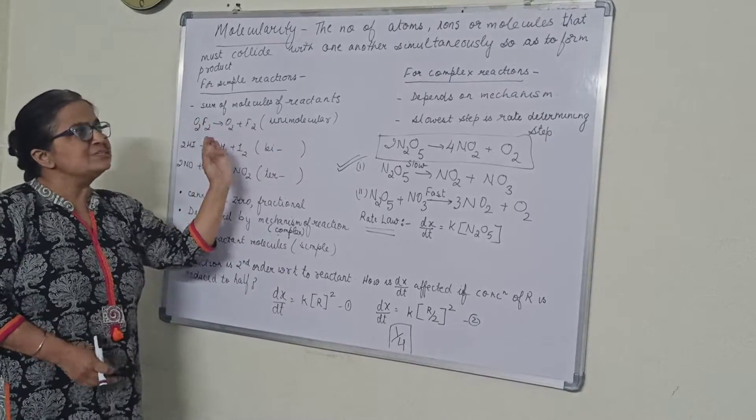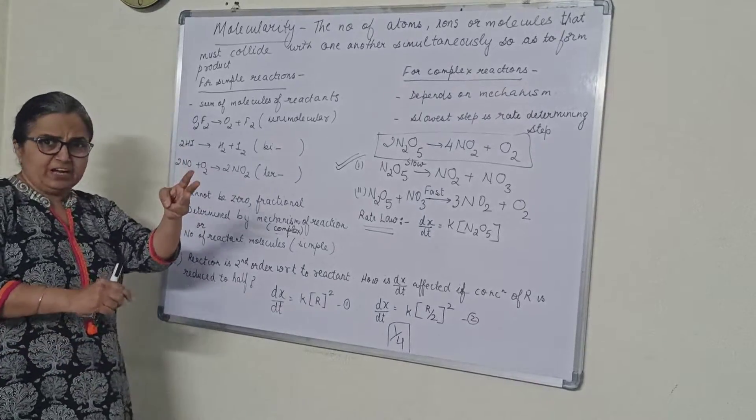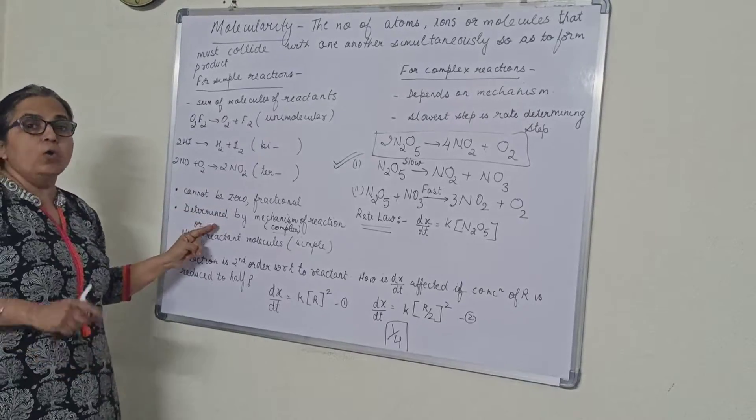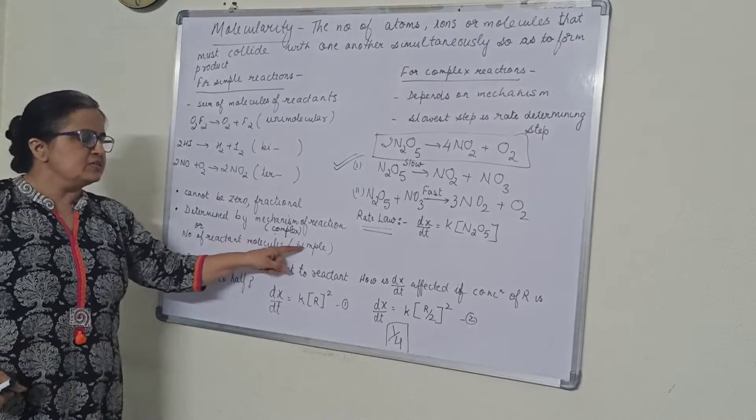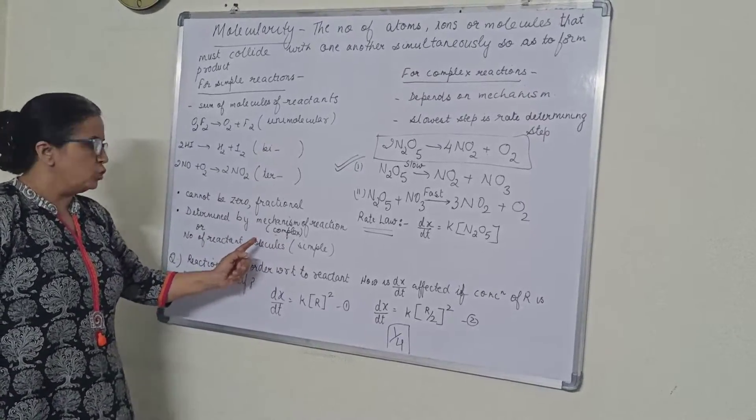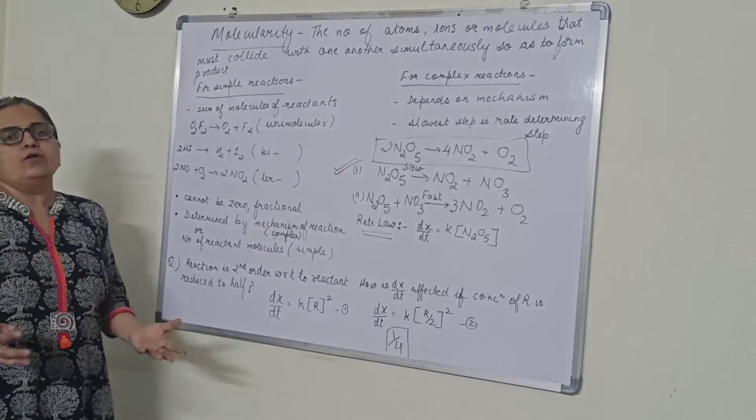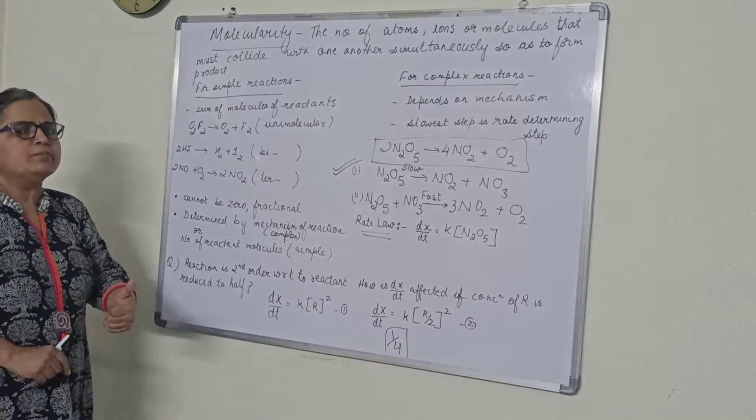So I have given both examples, simple and complex. Three main differences: definition, this part and how you are determining. Order is always experimental basis. This is depending upon whether it is simple or complex, whether directly from the reaction or from the mechanism. So I will discuss one numerical also based on order. What type of questions are asked in board exam?